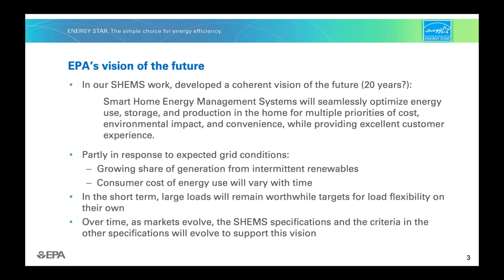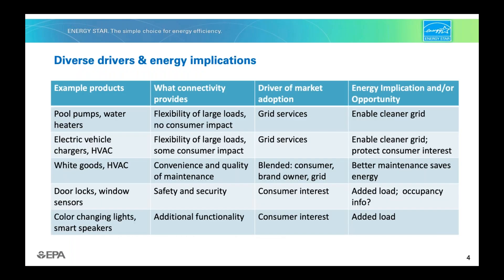The product of our rethinking in 2018 was that some products are different from others. The thing that pulls connected capabilities into the market is different for each product type. For pool pumps and water heaters, shifting load doesn't affect consumers at all, and there's not a great deal of consumer interest in having these products connected. Grid services — the ability to shift load — is likely to be the primary driver of bringing connected versions into the marketplace.